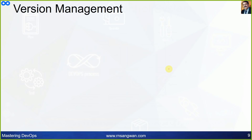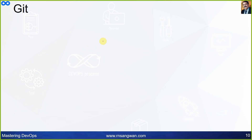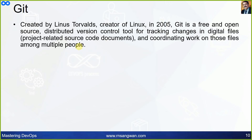Version management includes collaborative development on source code, tracking changes, managing branches and releases, and allowing rollback of changes — meaning you can go back to an old version if something goes wrong. So what is Git? It was created by Linus Torvalds.